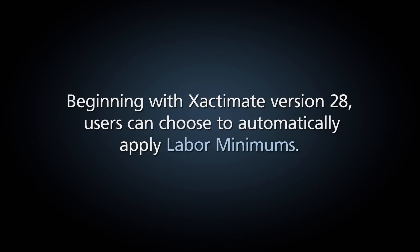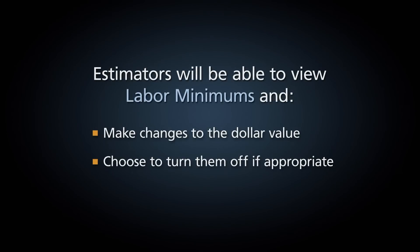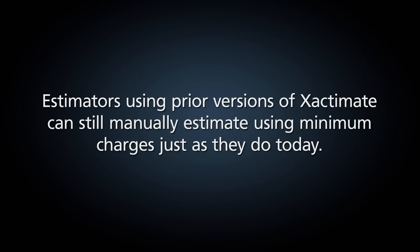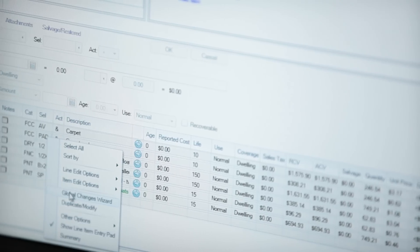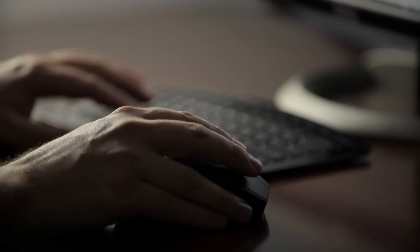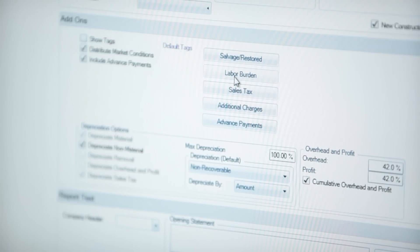Beginning with Xactimate version 28, Xactware price lists will support the use of labor minimums and users can choose to automatically apply them. Estimators will be able to view the labor minimums used for each estimate, make changes to the dollar value, or even choose to turn them off if appropriate. Estimators using versions of Xactimate released prior to version 28 can still manually estimate using minimum charges just as they do today. If you would like to learn more about how labor minimums may affect your estimates, please see our white paper on labor minimums found on our eService Center. I also strongly encourage you to compile several test estimates to familiarize yourself with the concept and understand the bottom-line impact of labor minimums before you begin using them on live estimates.